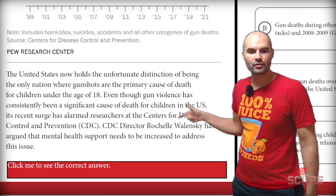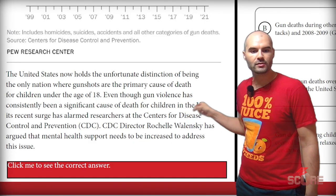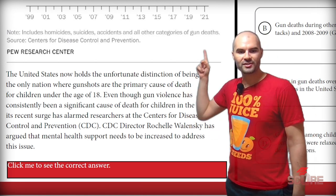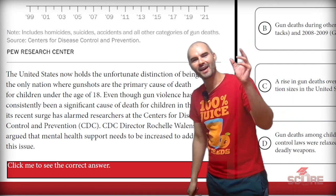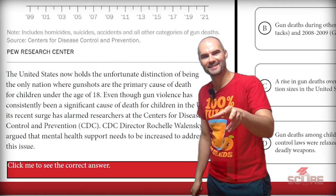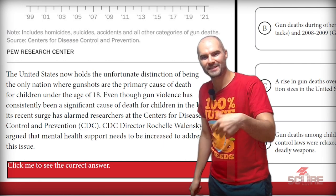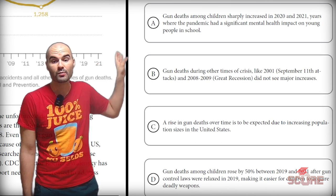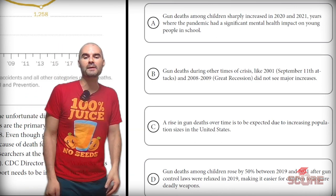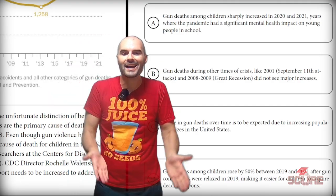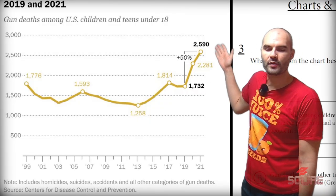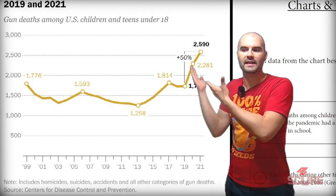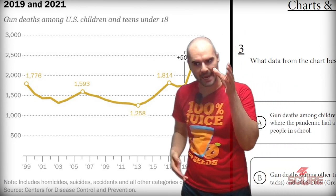For the third question, CDC director Rochelle Walensky has argued that mental health support needs to be increased to address the US being the only nation where gunshots are the primary cause of death among children. She argues that mental health is the issue. Answer A says gun deaths among children sharply increased in 2020 and 2021 — years where the pandemic had a significant mental health impact on young people in school. That's your answer. After 2020 we see a huge increase in the number of children dying from guns, so the argument makes sense and this data supports the claim.